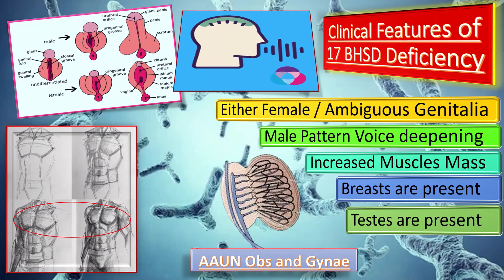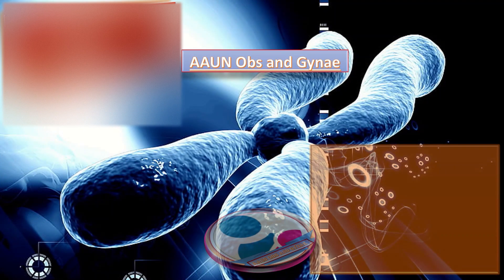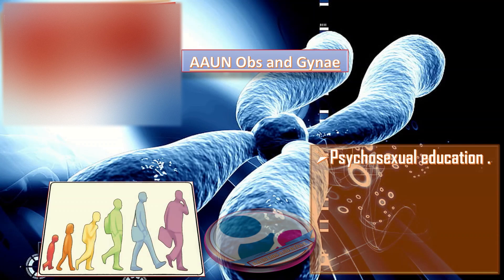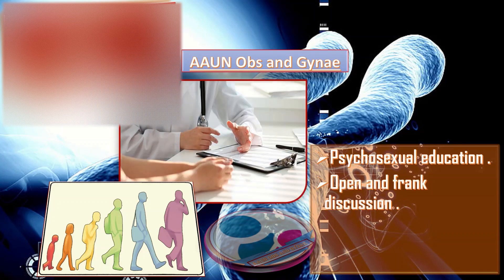Treatment options for these patients include, first, psychosexual education. Psychosexual therapy is a talking therapy aimed at helping couples and individuals discuss their lives, sexual issues, and preferences in order to resolve specific sexual problems — some refer to this as sex therapy. The second line of management is open and frank discussion, which should include what is known and what is not known about the long-term effects of gender assignment, including gender identity, gender role, and sexual satisfaction.